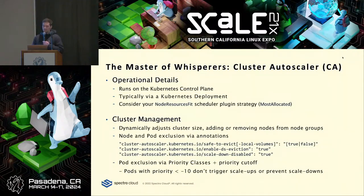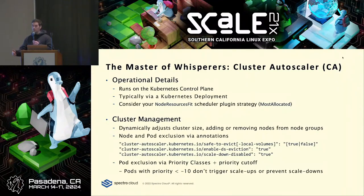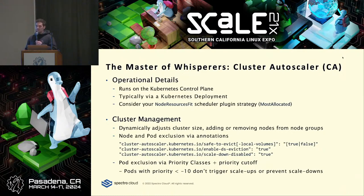By default, the kube-scheduler uses the least-allocated strategy — it picks a node with low utilization. But if you choose most-allocated, it'll do the opposite. That increases the aggressiveness of your bin-packing strategy because Descheduler will have to do less work.